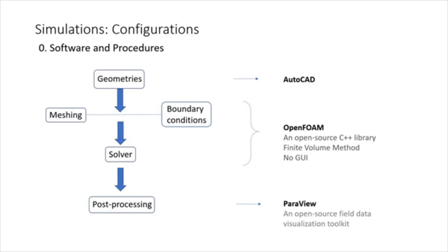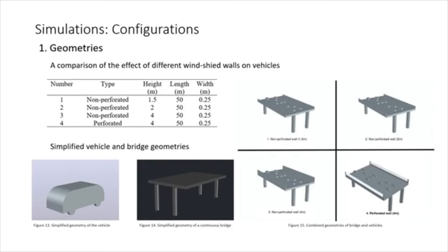Let's move on to the simulations I've performed. Three pieces of software are used in this study. Firstly, AutoCAD is used to generate geometries, and then the geometries are meshed in OpenFoam, which is an open-sourced C++ library based on finite volume method. It does not have a graphic user interface, so all settings of boundary conditions and solvers are configured in command lines, which is actually more efficient. Another open-source software used here is ParaView, which helps visualize the field data from OpenFoam. As the goal of this study is to compare the effect of different windshield walls, geometries of vehicles and bridge decks are simplified into versions in Figure 13 and Figure 14. There are four types of windshield walls used in the study, listed in the table. Three of them are non-perforated walls of different heights, which means no air can pass through, and there's also a perforated windshield wall.